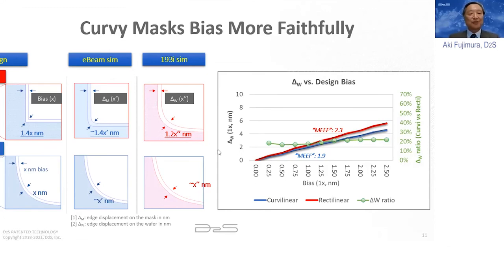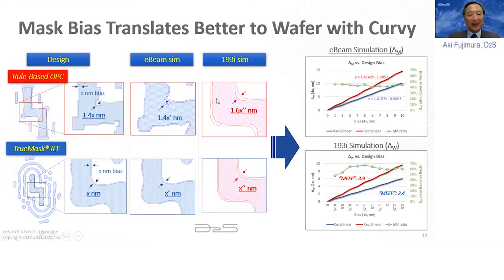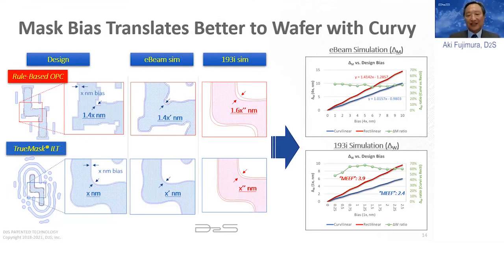If you take a more complex shape and do the same comparison — where rule-based OPC has added or removed corner enhancements — you end up with many more 1.4x differences all over the shape. The effect can be accentuated: in this case, 1.66x for the rectilinear version, whereas for the curvilinear version it's essentially uniform x everywhere. The difference in wafer simulation can be quite significant — in this case, 60% at that particular corner.